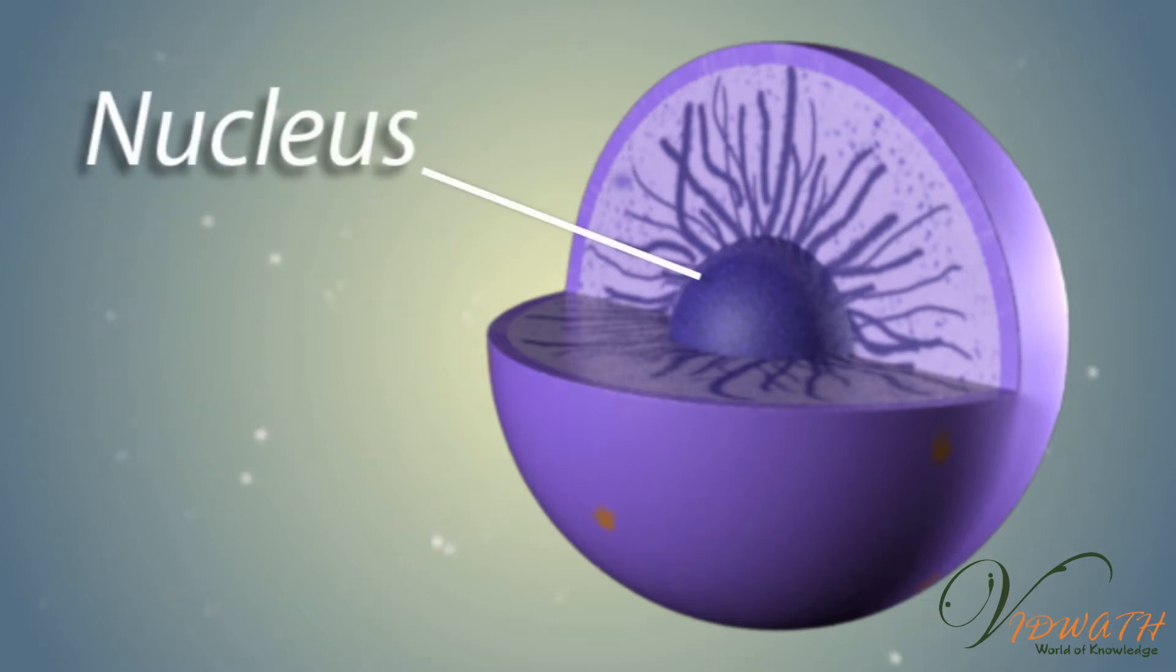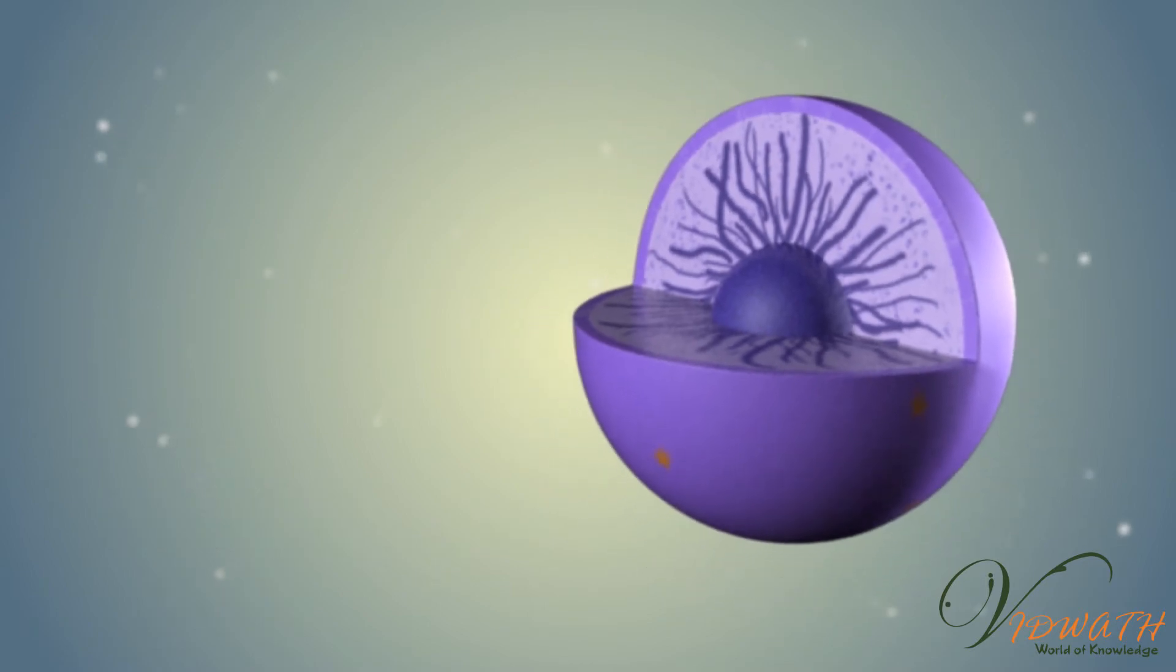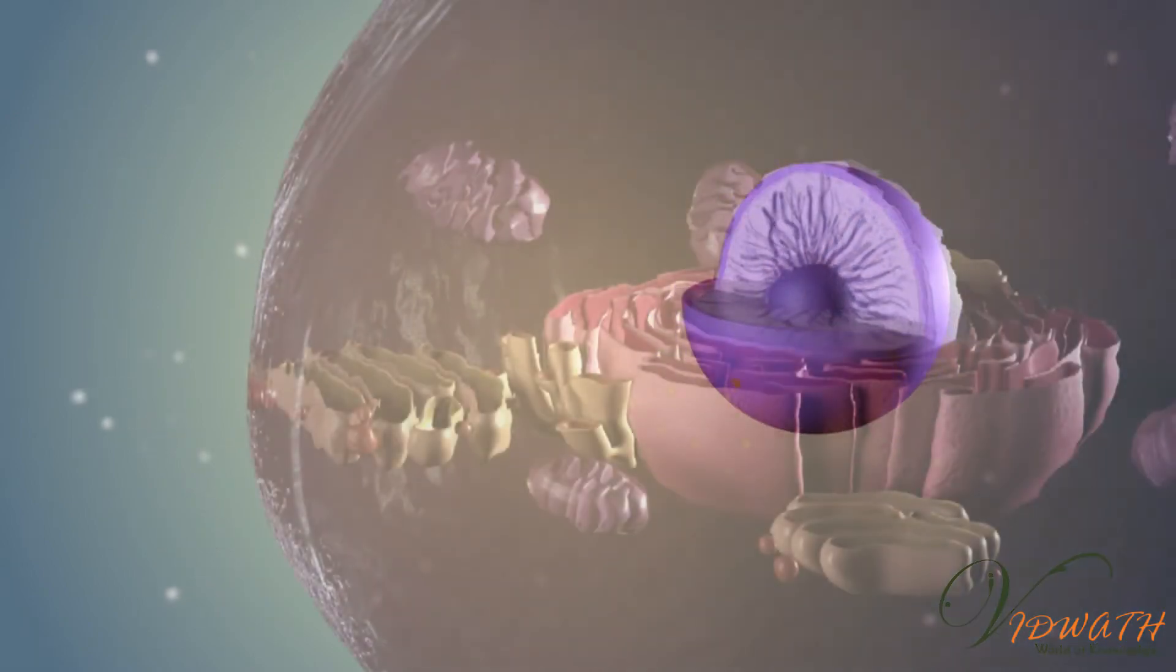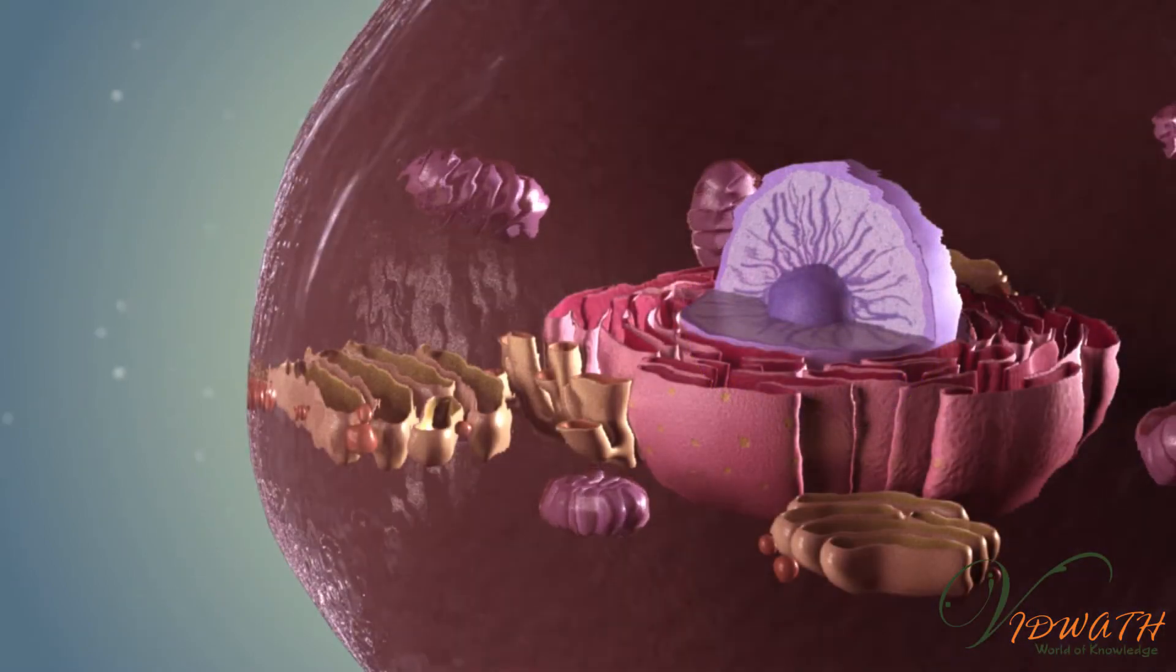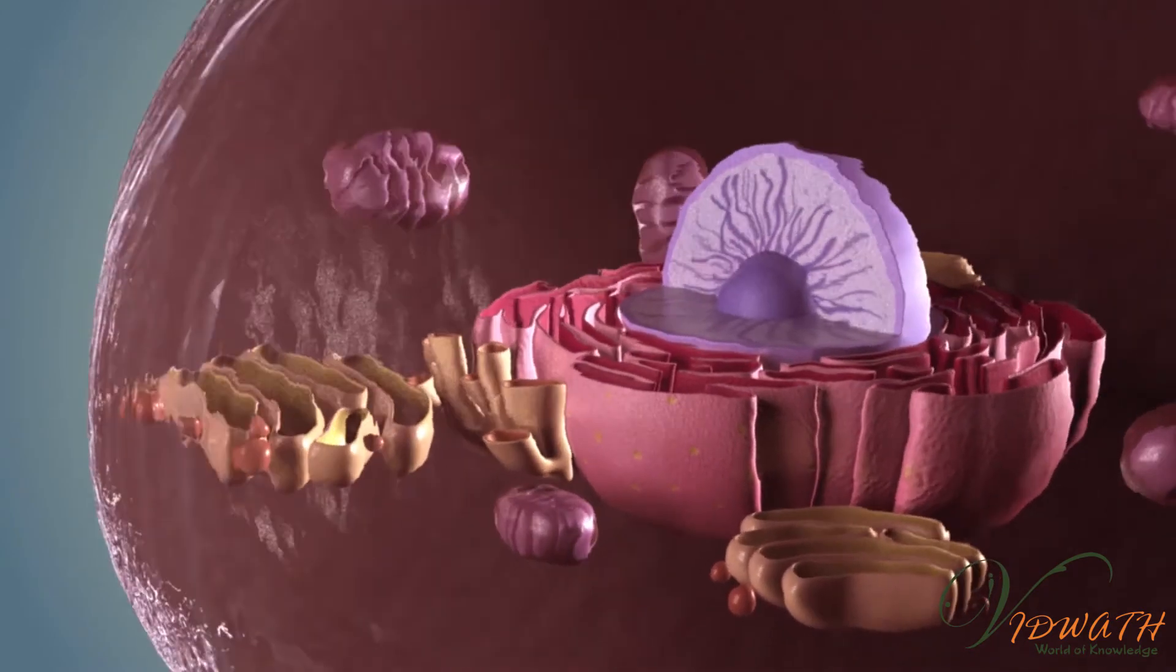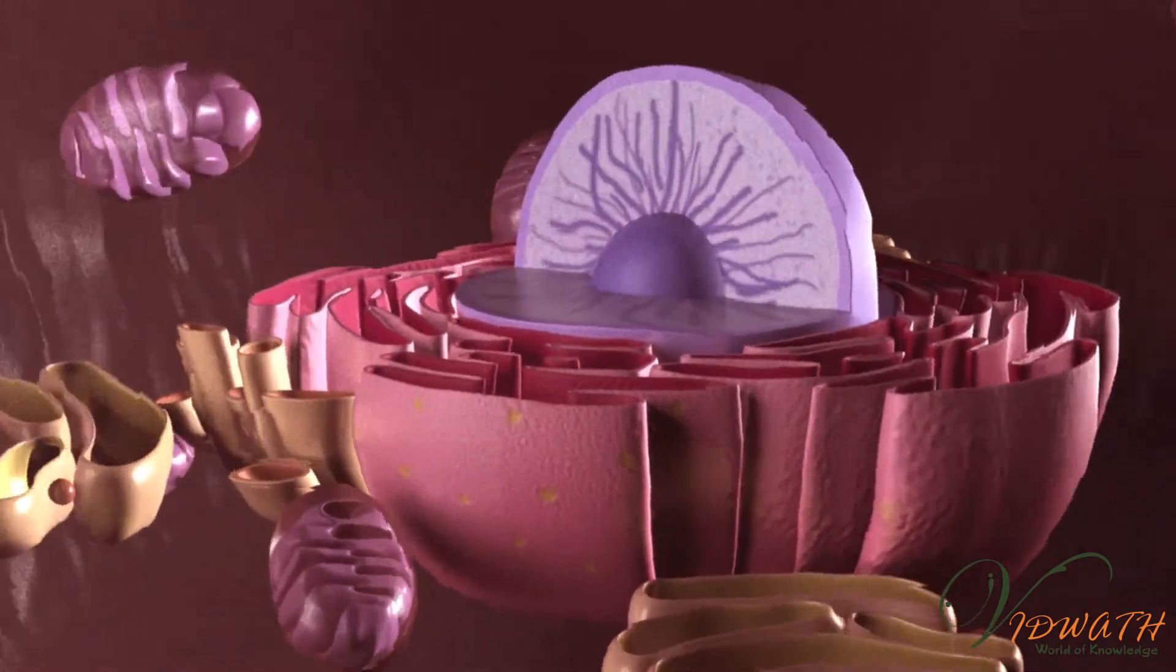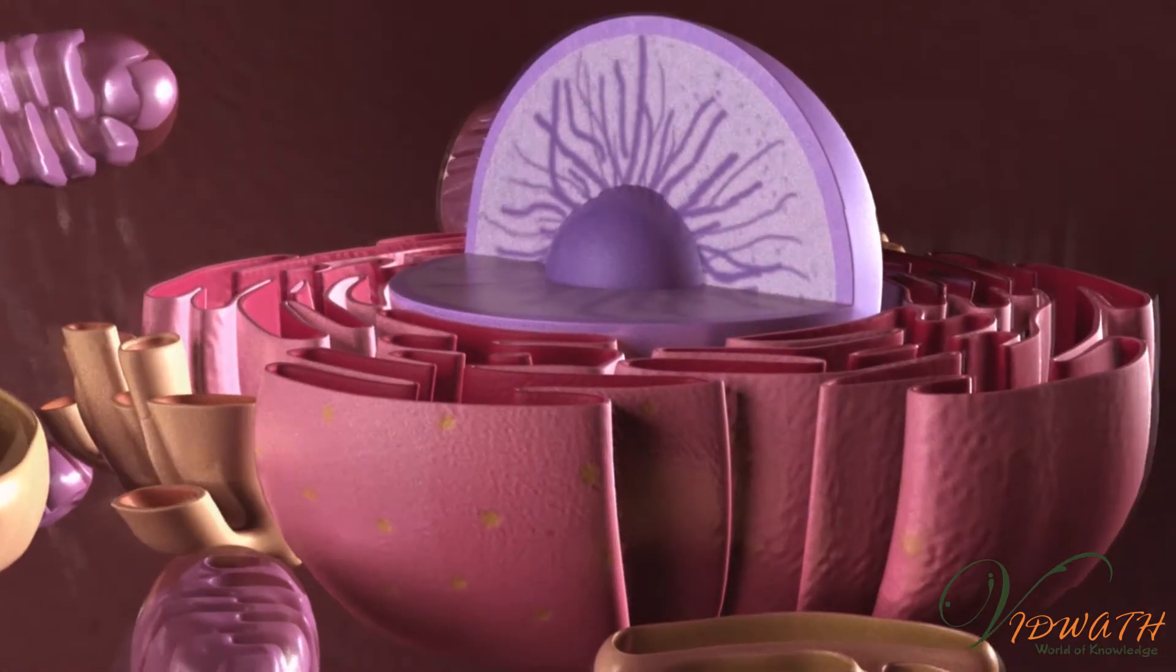The nuclear membrane is made of a lipid bilayer. The membranes have pores that regulate what goes in and out of the nucleus. Inside the nucleus is the nucleolus, which holds the genetic material DNA. Using this DNA, transcription is carried out, making mRNA.